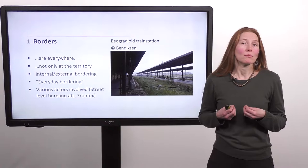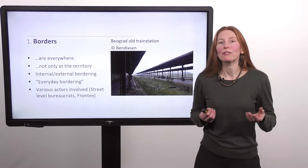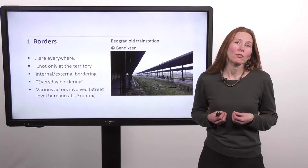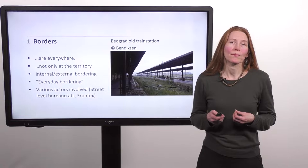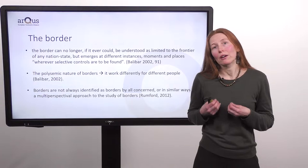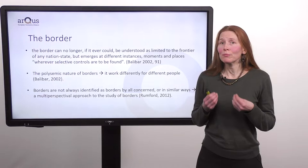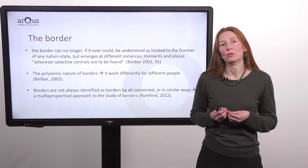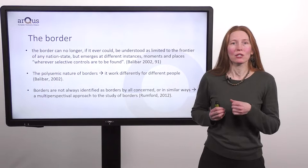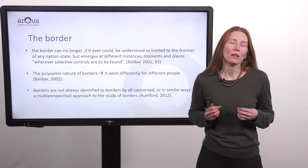This is what is meant with the concept of everyday bordering — bordering which takes place on the street, in everyday life, and which involves a variety of actors such as street-level bureaucrats, and not only frontier checks, although police and frontier checks are also involved. Balibar has illustrated how the border can no longer be understood as limited to the frontier of any nation state. Instead, it emerges at different instances, movements and places, wherever selective controls are to be found. That is why Balibar talks about the polysemic nature of borders — because the border works differently for different people.